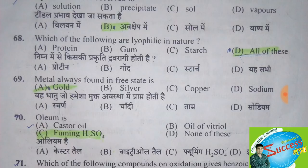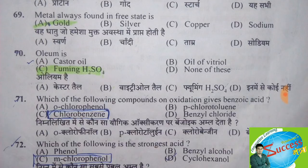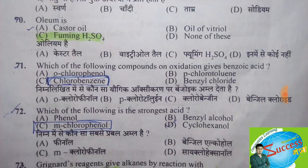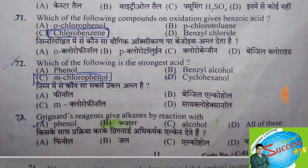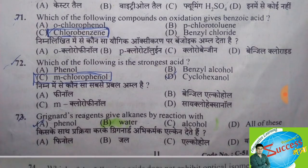The metal always found in free state — the correct answer is option A, gold. Oleum is — the correct answer is option C, fuming sulfuric acid. Which of the following compound on oxidation gives benzoic acid? The correct answer is option C, benzyl chloride — benzyl chloride on oxidation gives benzoic acid.